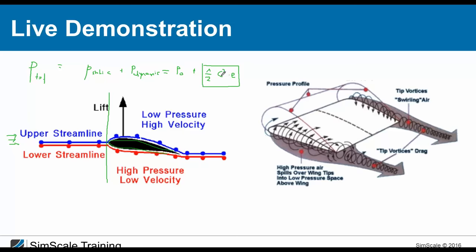This drop in static pressure creates a pressure difference between the low and high pressure regions, generating an overall force that pushes the wing upward — that's how a wing works. The low-pressure side is also the high-velocity side, while the high-pressure side is the low-velocity side. Now let's move out of our two-dimensional view and look at a three-dimensional wing — in essence it's the same principle.